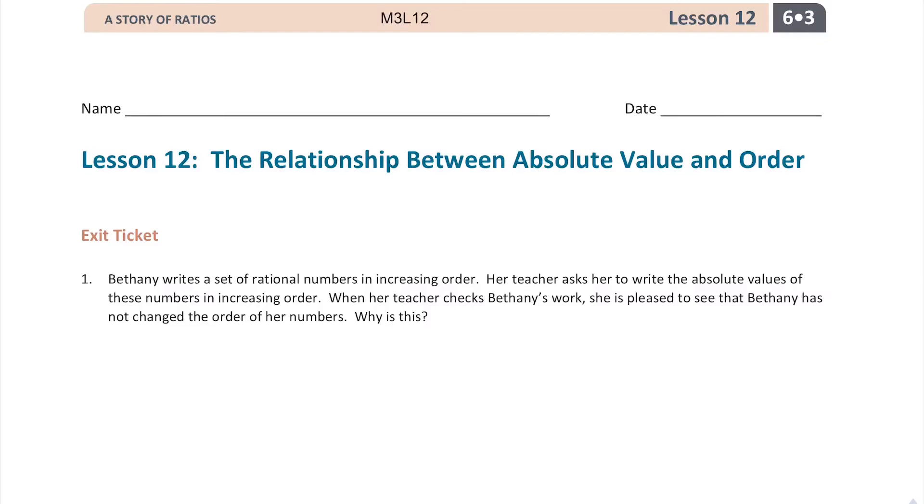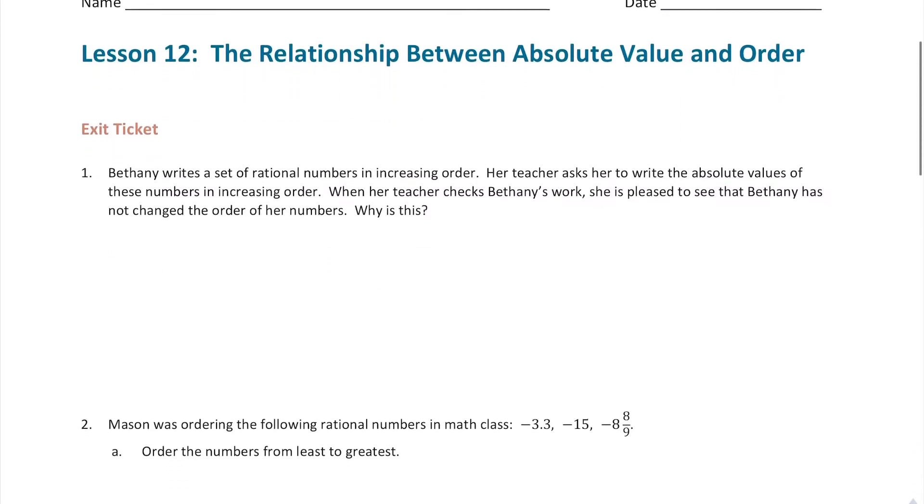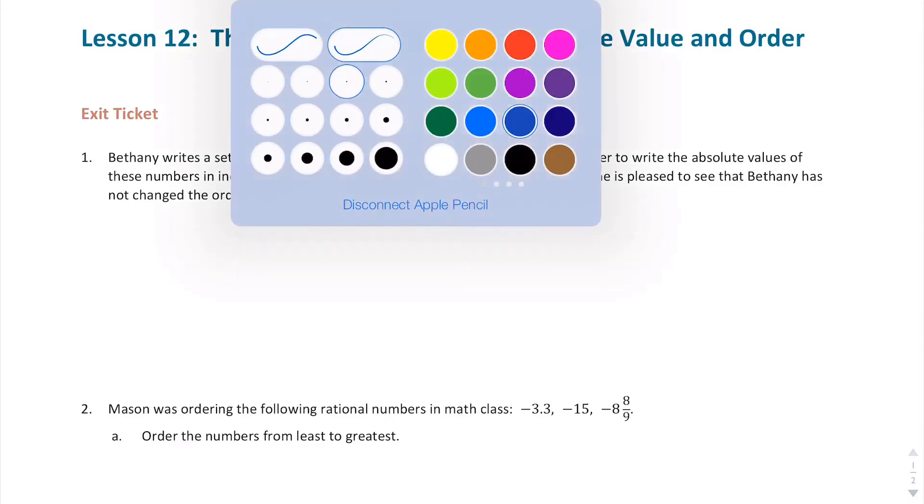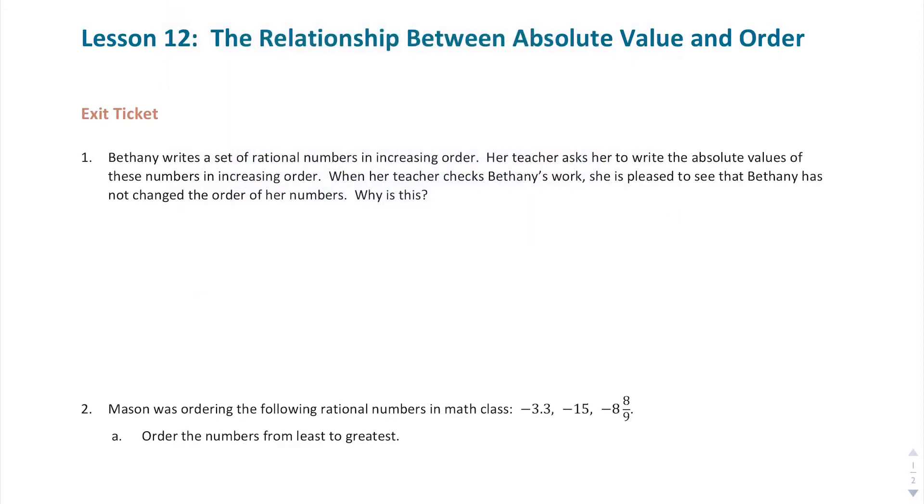I believe the lesson imparted here is going to be a simple one. It's exemplified right here with Bethany's problem number one. She writes a set of rational numbers in increasing order, and when she writes them as absolute values in increasing order, the order did not change. What is special about her list of numbers? Let me give you a counter example followed closely with an actual example that works.